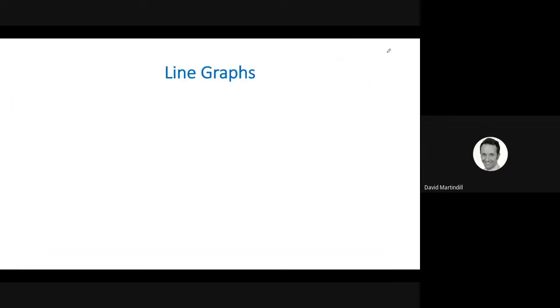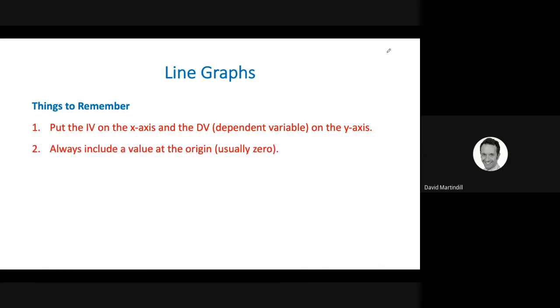Line graphs. When you're drawing a line graph, ensure that the independent variable goes on the x-axis. The dependent goes on the y. Make sure there's an origin. What I mean by that is that there is a value, usually zero, at the bottom left-hand corner of the graph.